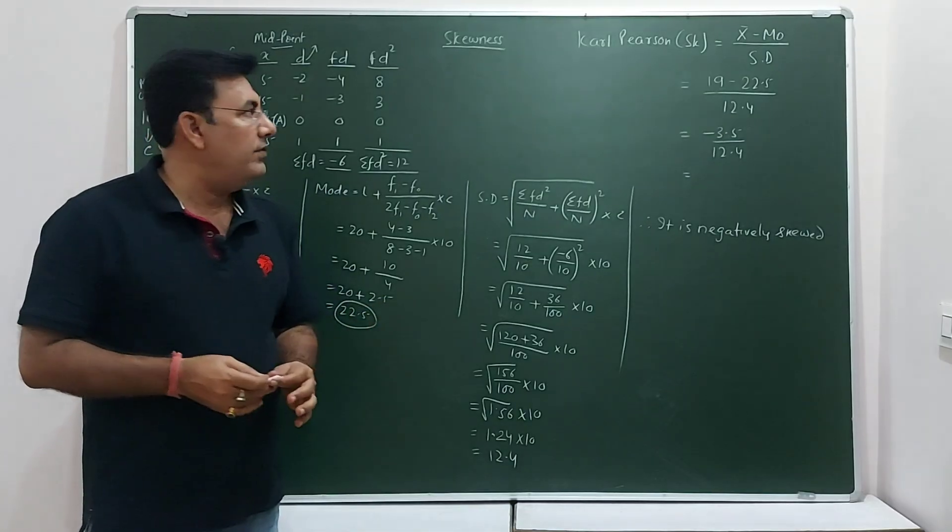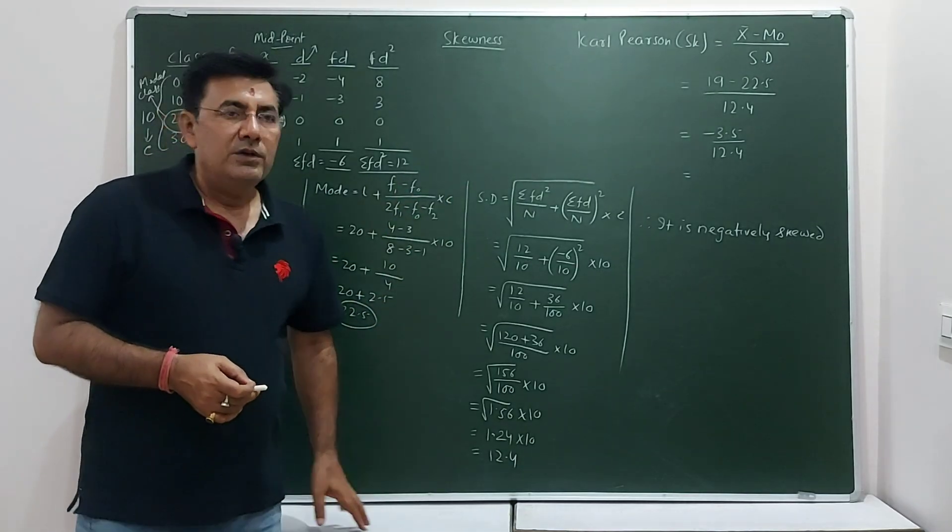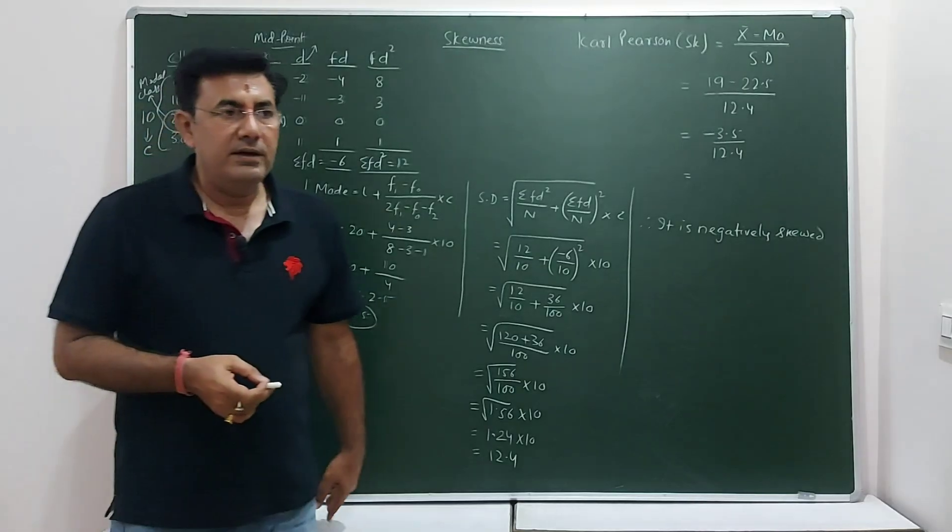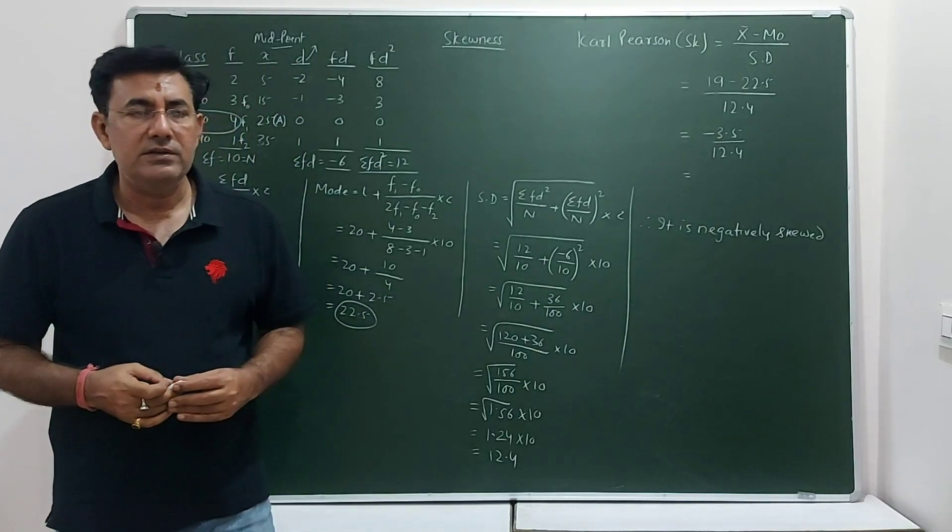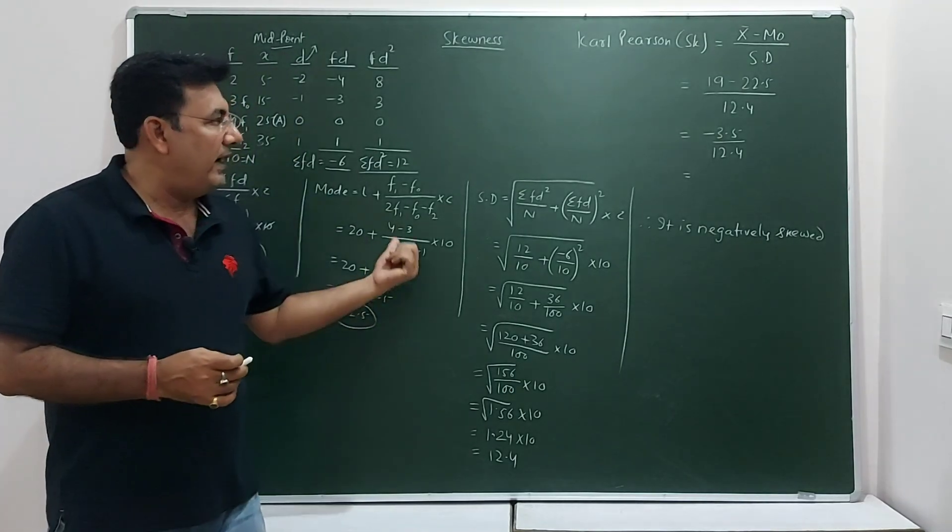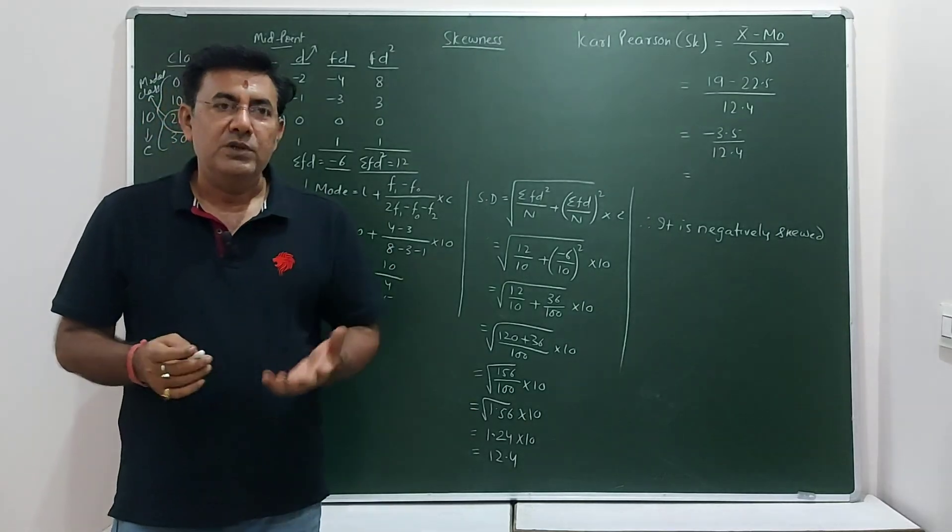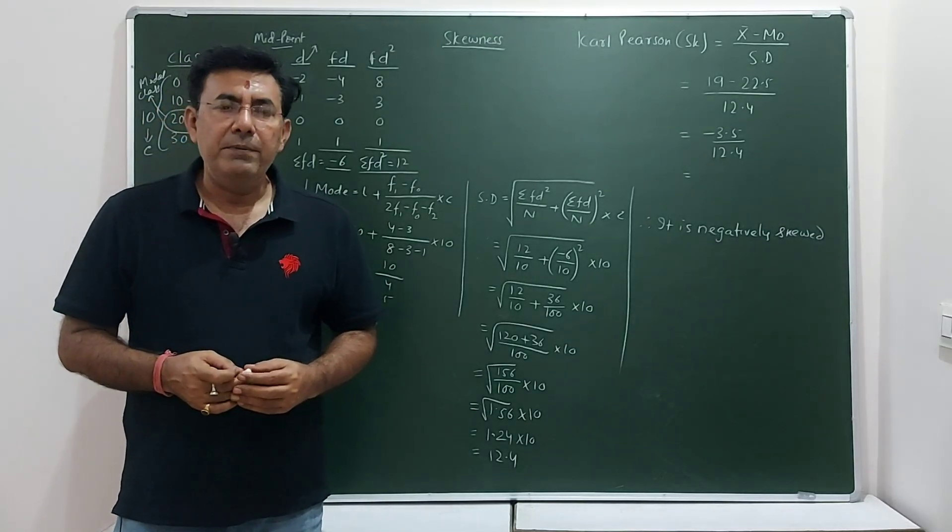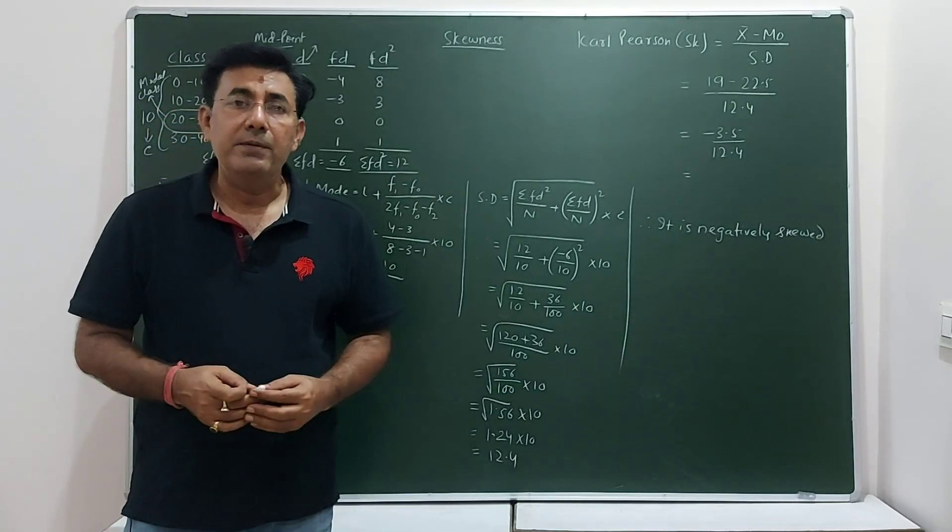So, this is the conclusion like we can have after calculating the skewness of this particular distribution. So, friends, this is how we will use to find skewness by using Carl Pearson method. I hope you would have understood this. Not very difficult. You might get this type of question in the exams. So, thank you very much for watching this video and a very best of luck.